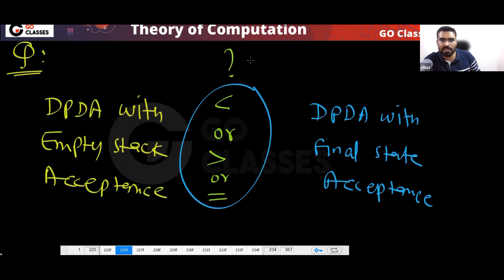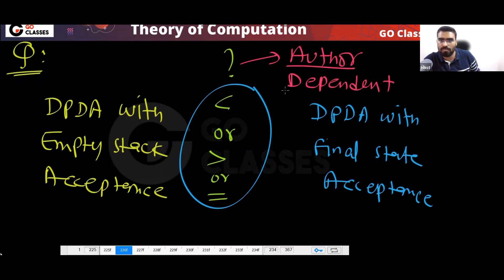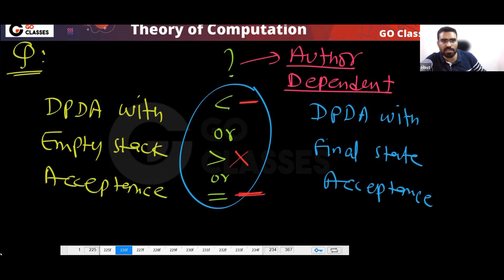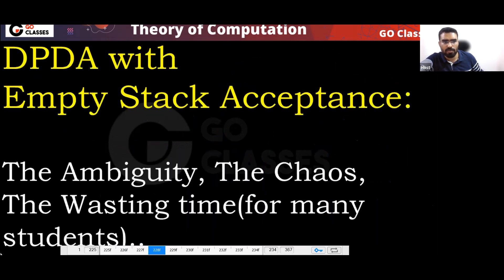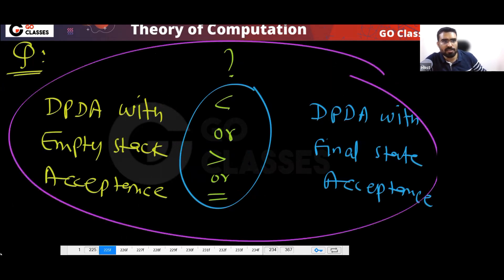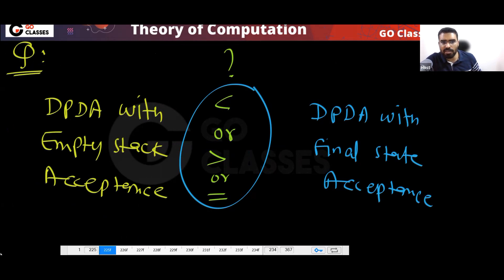The answer is author dependent. There are many authors according to whom DPDA with empty stack has less power. It is either this or this, and that will depend on the author. On the GeeksForGeeks website, there is a lot of confusion among students on this question — there are more than 200 comments.